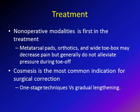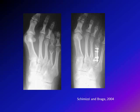Cosmesis is the most common indication for surgery. Some literature suggests surgery should not be done for cosmesis and only for transfer lesion and metatarsalgia. If you would like to lengthen, there are two options: one is an acute technique, where you lengthen the metatarsal acutely — you cut the bone, distract the two ends, apply a bone graft, and fix it internally. The other is gradual lengthening. Acute lengthening is less commonly used now; more and more we are using the gradual lengthening.